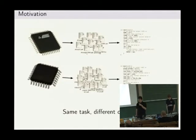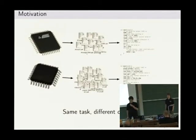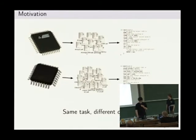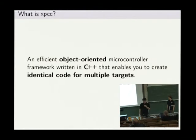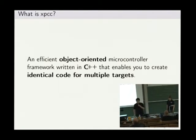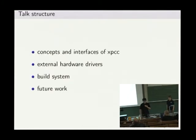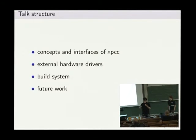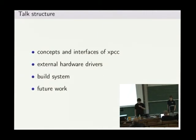The motivation here is to preferably write identical code for multiple microcontrollers. If you've read through a lot of microcontroller documentation, you find out that there are a lot of similarities between microcontrollers. We've essentially compiled all of this into a nice library and added some goodies like object-oriented features. It's written in C++, and you can write almost identical code on multiple targets. Let's talk about the structure.